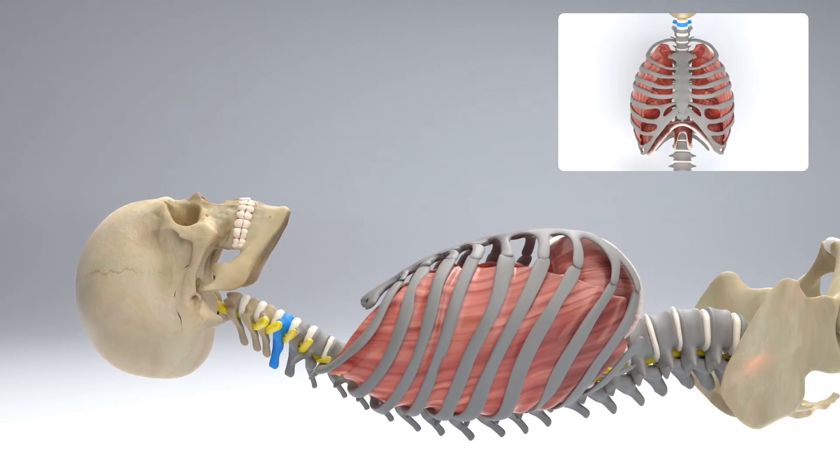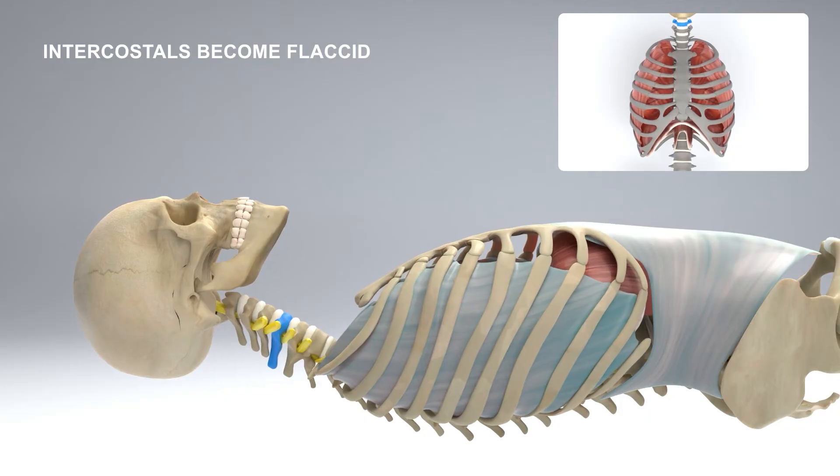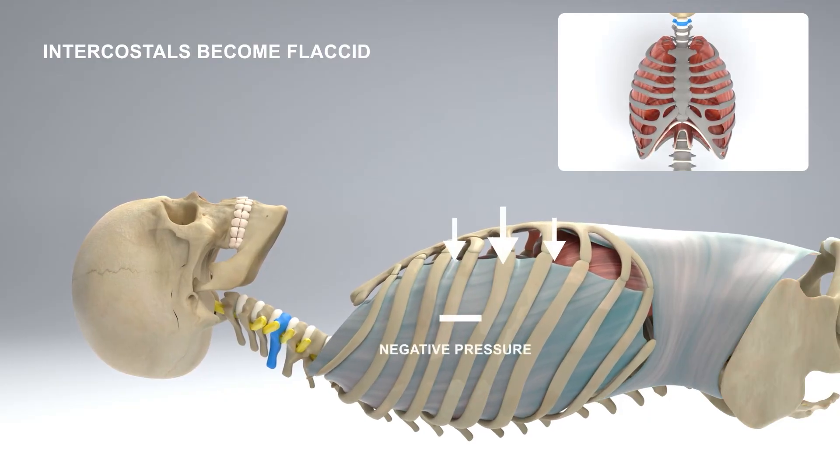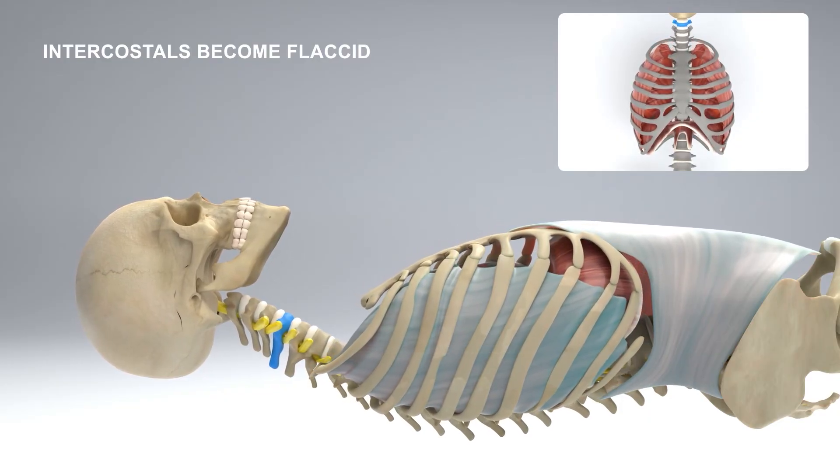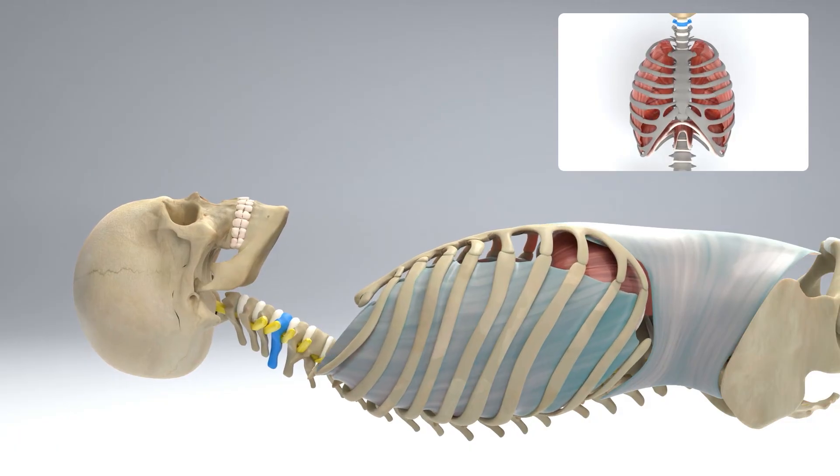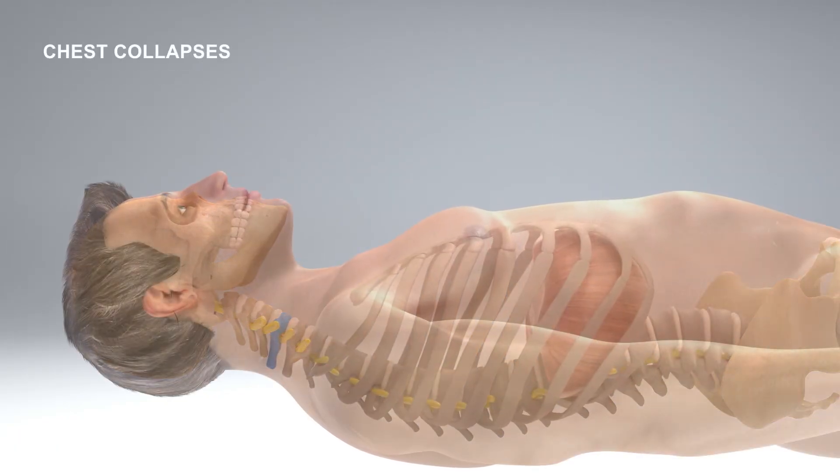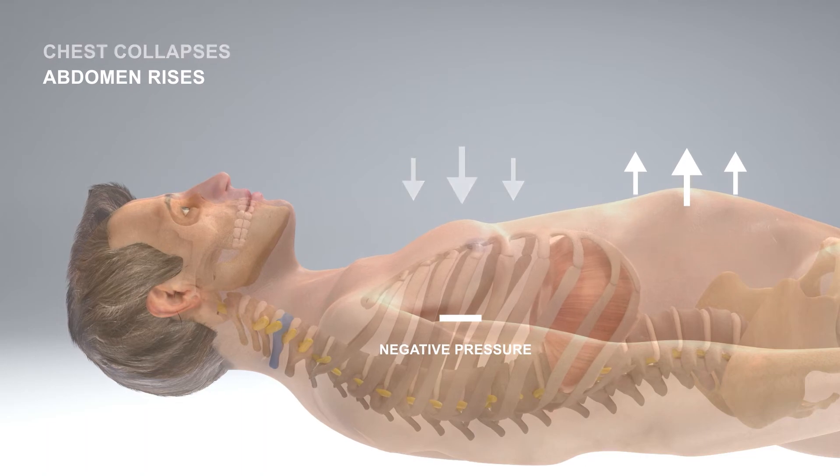Now the negative pressure inside the chest causes an adverse effect because the intercostals are flaccid, they are not stabilizing the ribcage, and the chest collapses and is pulled inwards by the diaphragm action on inspiration.